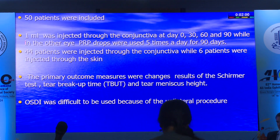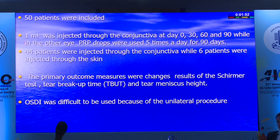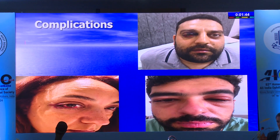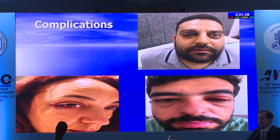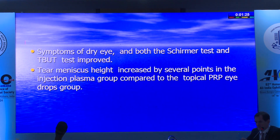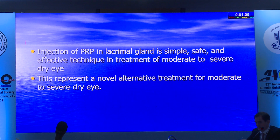Follow-up using Schirmer test, breakup time, tear meniscus height, and OSDI. Few complications, mostly hemorrhagic—subconjunctival hemorrhage, orbital hemorrhage with subconjunctival, and one case of lid edema—none visually significant with no long-term sequelae. Schirmer test, breakup time, and tear meniscus height all improved on the side that received the platelet-rich plasma injection.